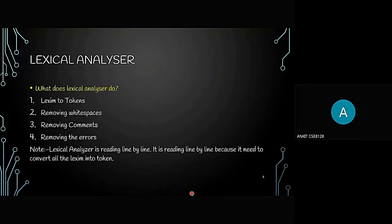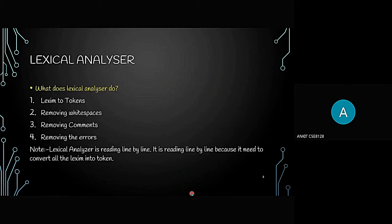Now let's see why we use the lexical analyzer, or what it does. There are four simple points: first, it converts lexemes to tokens; second, it removes white spaces; third, it removes comments; and fourth, it removes errors. The main point is that the lexical analyzer reads line by line in order to convert all lexemes into tokens.